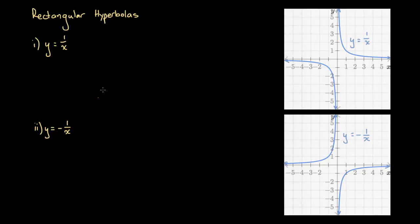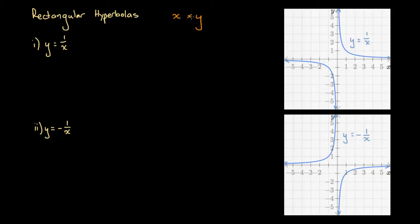Here we've got a couple of equations that represent rectangular hyperbolas and a couple of graphs. But before we get to them, I want to pose a problem to you. Imagine if I said: give me two numbers — let's call them x and y — which, when multiplied together, equal one. So the problem is: give me a value for x and a value for y such that when these two are multiplied together, I get one.